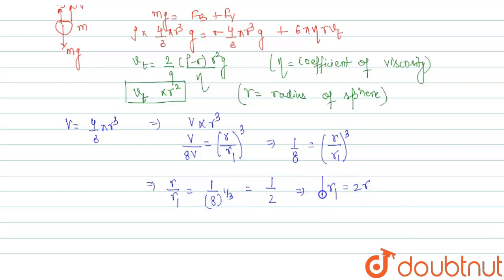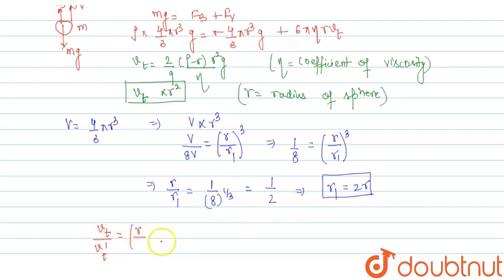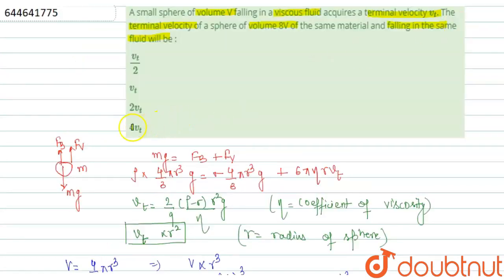Since terminal velocity is directly proportional to r², we write: vt / vt' = (r / r1)² = (r / 2r)² = 1/4. Therefore the final terminal velocity vt' = 4 vt — it is 4 times the initial terminal velocity.